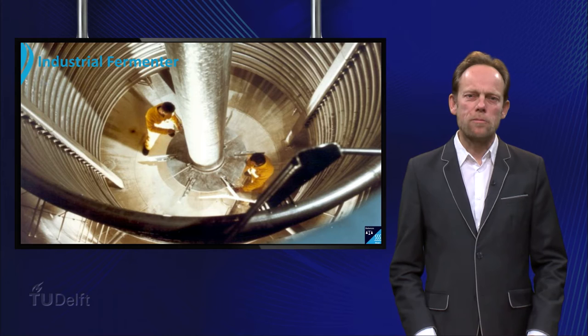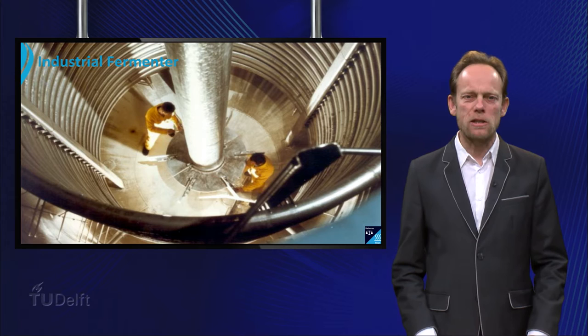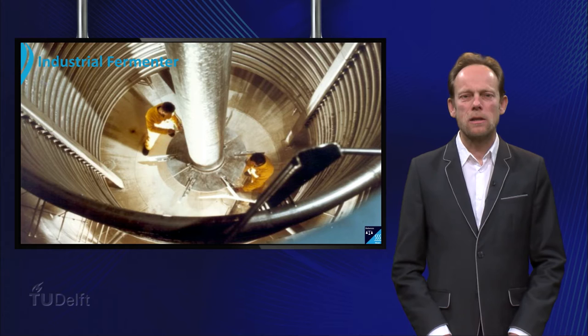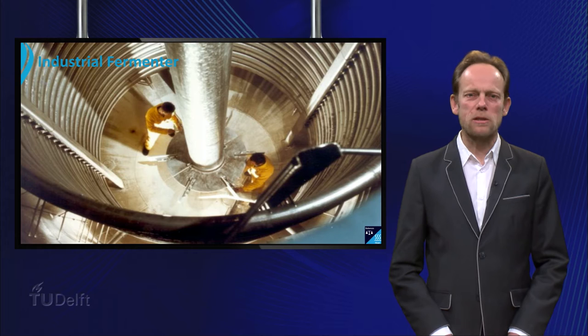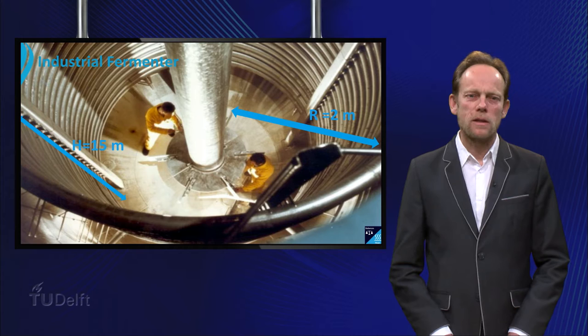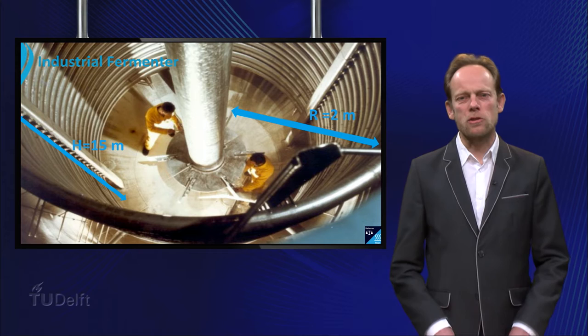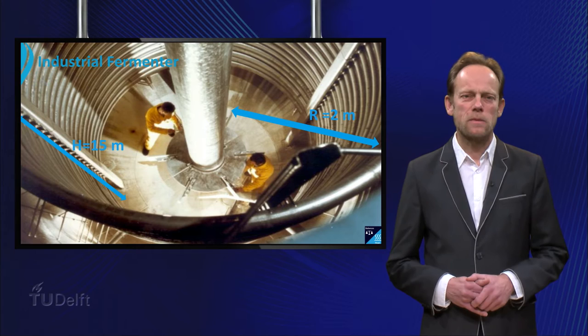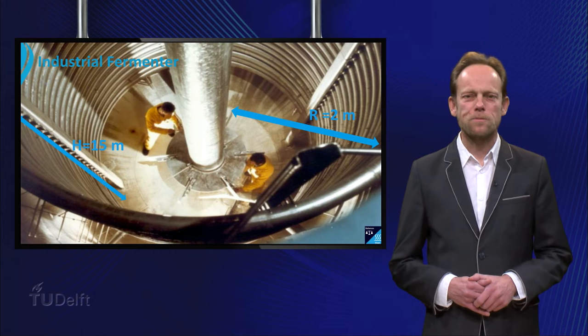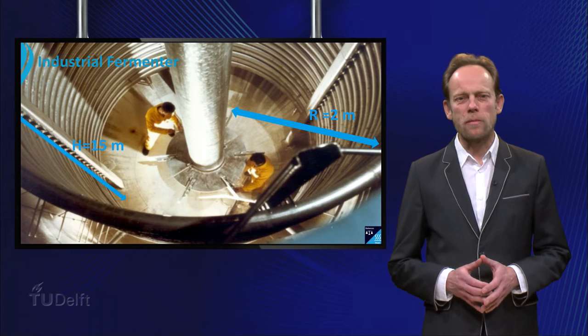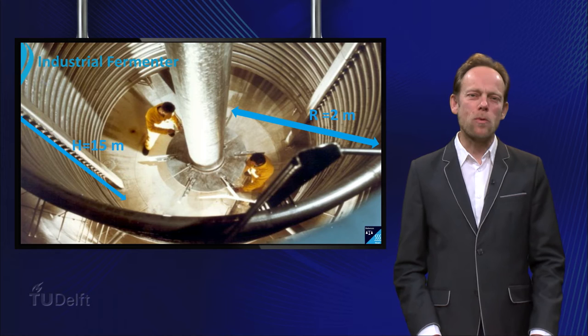Today many products such as biofuels, antibiotics, enzymes, and monomers for bioplastics are made with the help of microorganisms in large scale fermenters. Typical dimensions of an industrial scale fermenter are a diameter of 4 to 6 meters and a height of 10 to 20 meters or even taller. In this picture you see two persons working deep down in the fermenter, surrounded by a huge spiral tube used for cooling. This relates to the central topic of this movie: heat removal. This is a key factor that can limit the rate of the reaction in large scale fermenters — a very cool topic that illustrates how important transport phenomena are in practice.